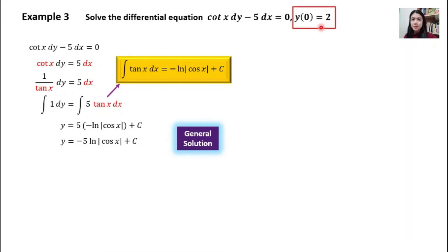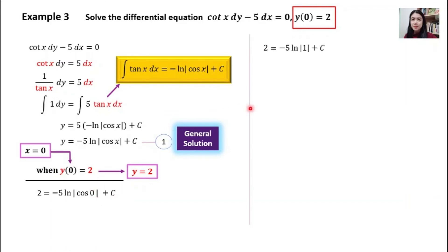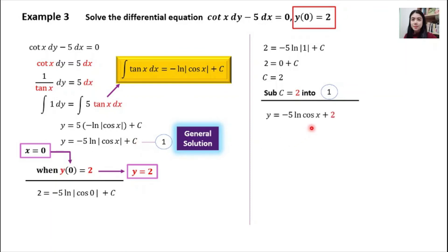We must continue because we have an initial condition. When y(0) = 2, your x = 0 and y = 2. Substitute into the general solution. So y = 2 and x = 0: cos(0) = 1, and ln(1) = 0, so 0 multiplied by negative 5 gives 0, and the value of c equals 2. Now that we know c, substitute it into the general solution to get the particular solution.